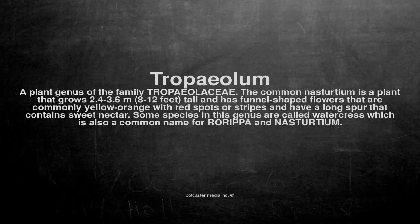The common nasturtium is a plant that grows 2.4 to 3.6 m tall and has funnel-shaped flowers that are commonly yellow-orange with red spots or stripes and have a long spur that contains sweet nectar. Some species in this genus are called watercress, which is also a common name for Rorippa and nasturtium.